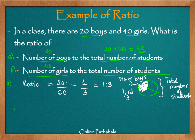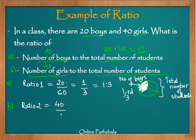Now let us look at Example B, where we find the ratio of girls to the total number of students — let's call it ratio 2. Here, 40 is the number of girls which becomes the numerator, and 60 is the total number of students, the denominator. Again, I divide both numerator and denominator by 20: 40 divided by 20 gives 2, and 60 divided by 20 gives 3.